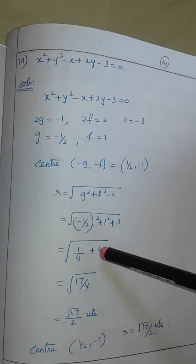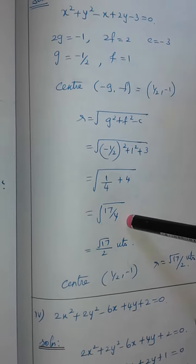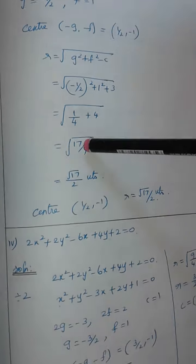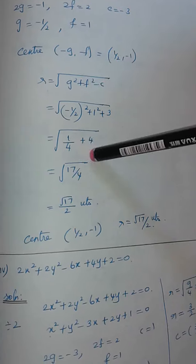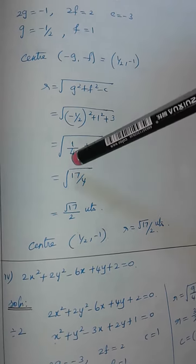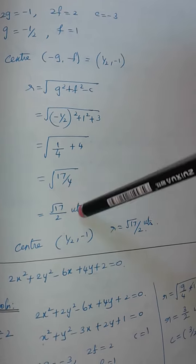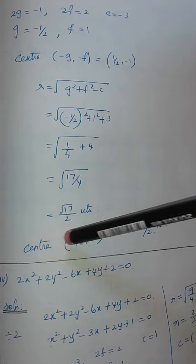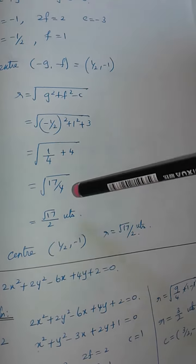So, 1 by 4 plus 1 by 4 plus 3. That gives 1 plus 3 equals 4, and then 4 minus 16 plus 1 is 17 by 4. Then root of 17 by 4 is equal to root 17 by 2. So the radius is root 17 by 2. The center value is (1 by 2, minus 1).